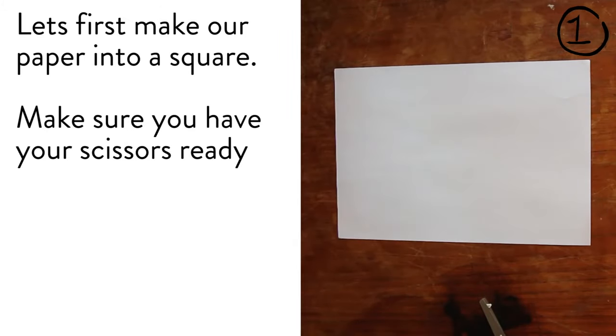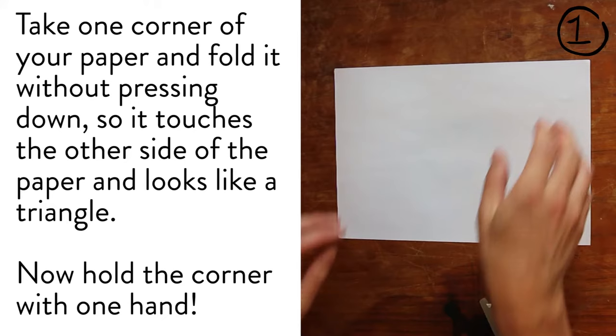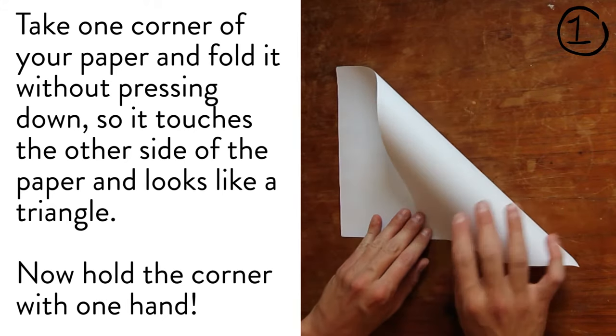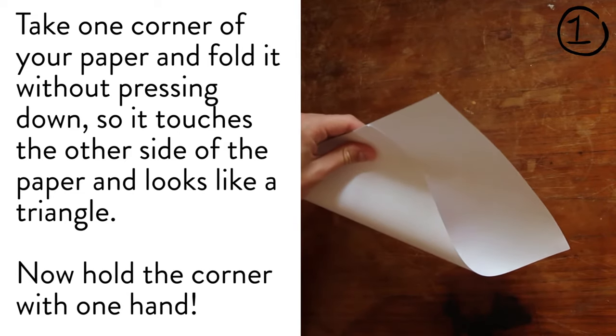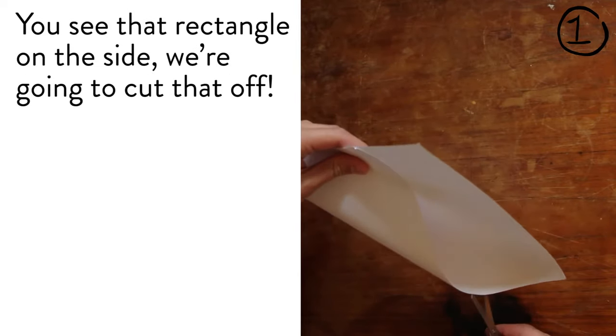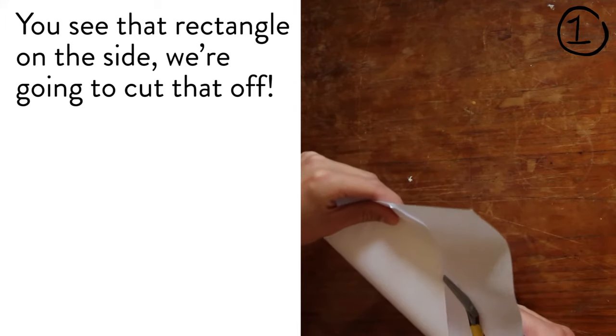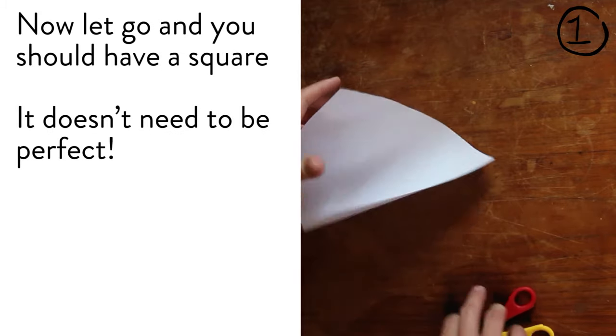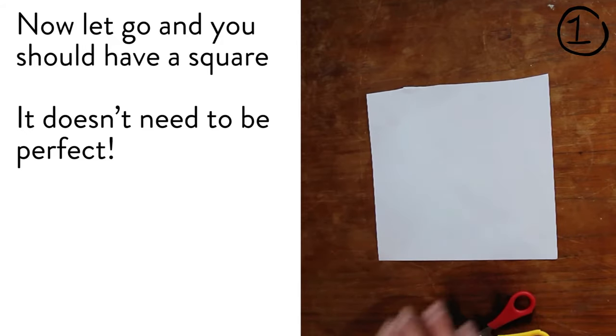Let's first make our paper into a square. Make sure you have your scissors ready. Take one corner of your paper and fold it without pressing down so it touches the other side of the paper and looks like a triangle. Now hold the corner with your hand. You see that rectangle on the side, we're going to cut that off. Now let go and you should have a square. It doesn't need to be perfect.